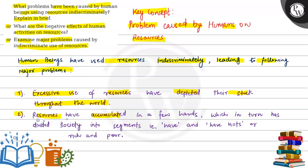Resources have accumulated in few hands, which in turn has divided society into segments that have and have-nots, or rich and poor. And the resources are only in some people's hands, some of the big companies, some of the big countries. They have all the resources under their control. This is why they have divided the world into two parts, which have and have-nots, which are rich and poor. And the third point is...